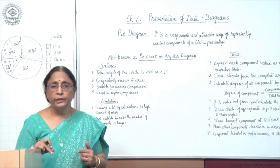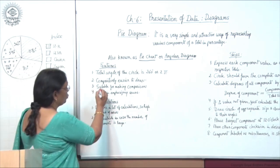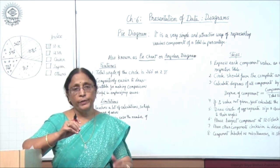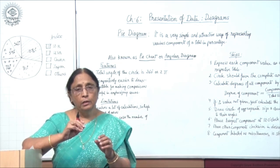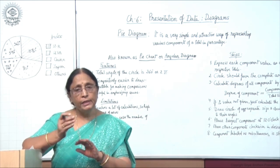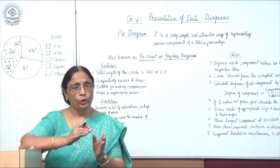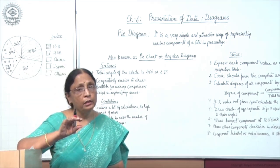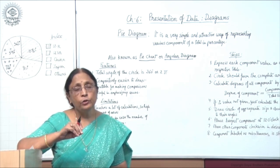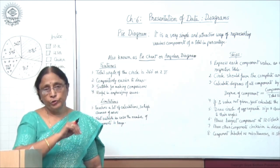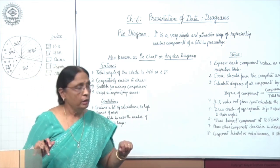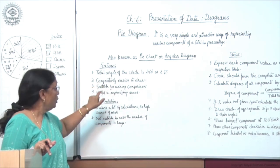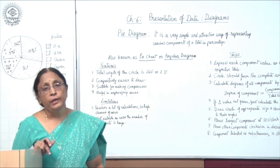Third, the pi diagram is suitable for making comparisons. Different components are drawn by dividing the circle into different parts, and each part shows different values — comparison of which part is bigger or smaller becomes easy at a glance. Fourth, each angle is shown on the basis of the value given, making it easier to emphasize a particular area of distribution.